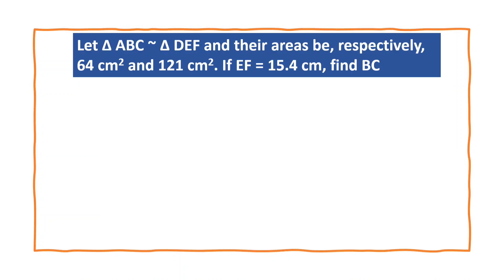In this video, let us solve this question. The question is: let triangle ABC be similar to triangle DEF, and their areas be respectively 64 cm² and 121 cm². If EF is equal to 15.4 cm, find BC.